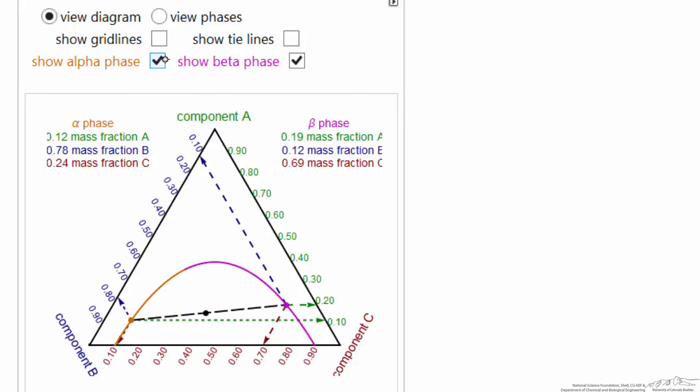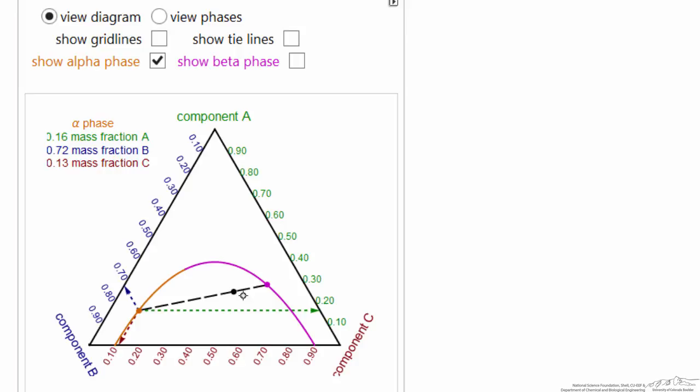I can also select to show the composition of the other, or I can remove this, just so I can more easily visualize how we get these compositions, and then moving around to give us a better idea of what phases are in equilibrium.